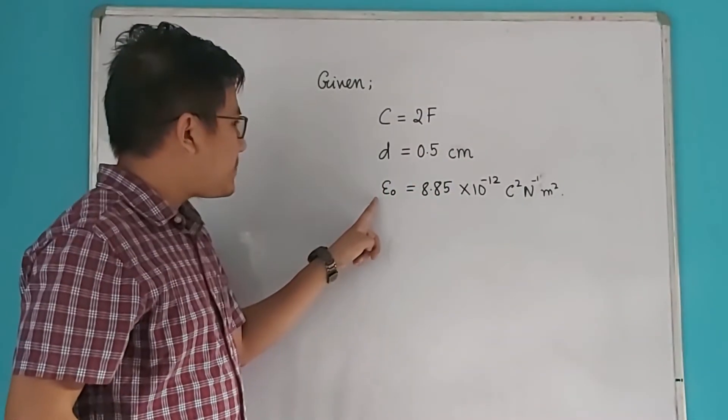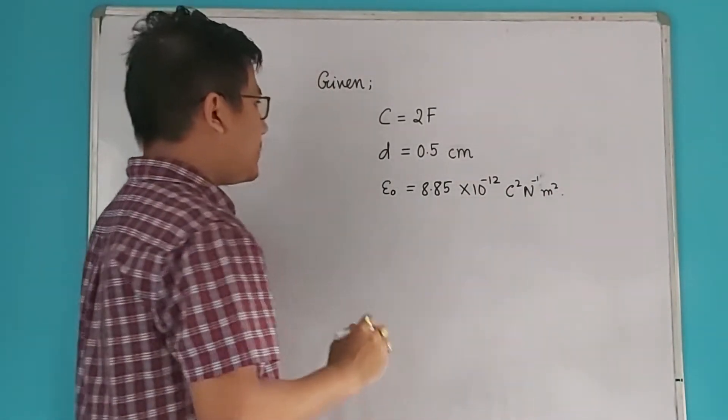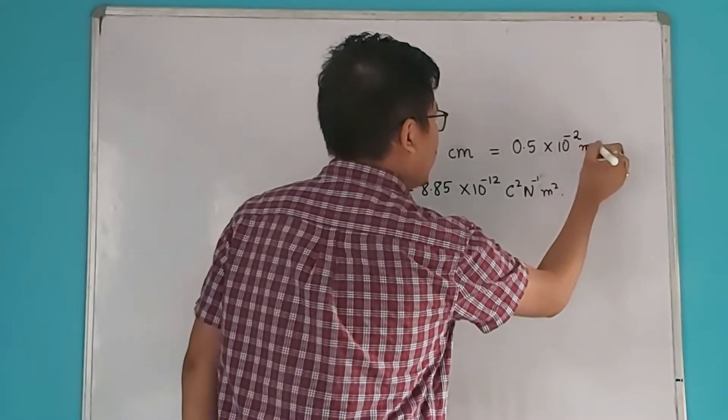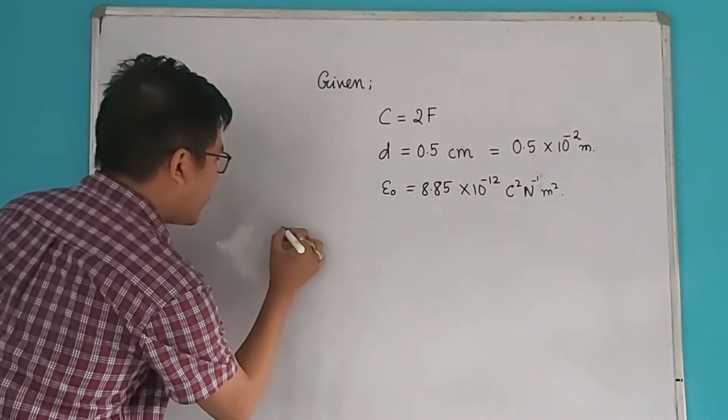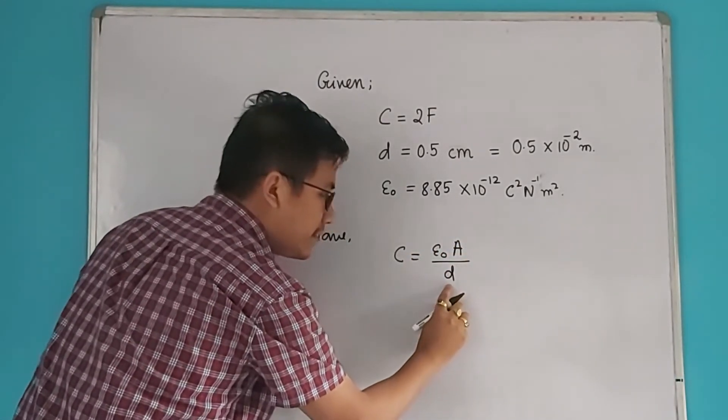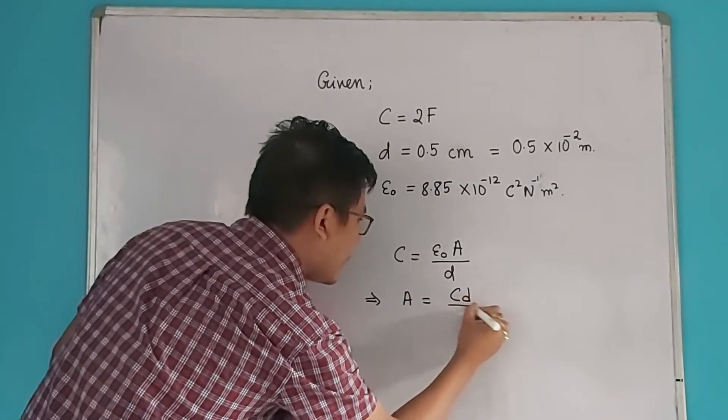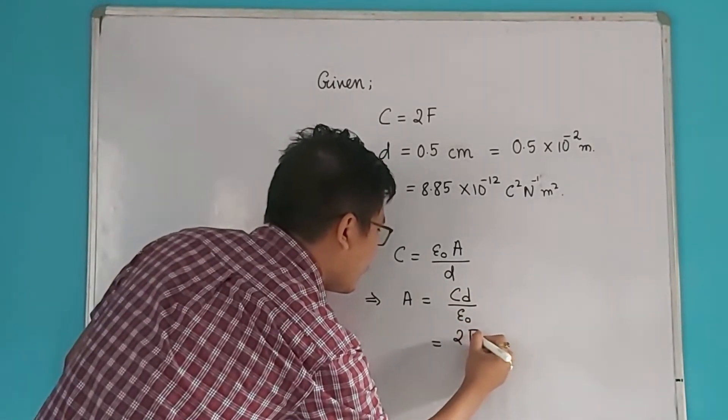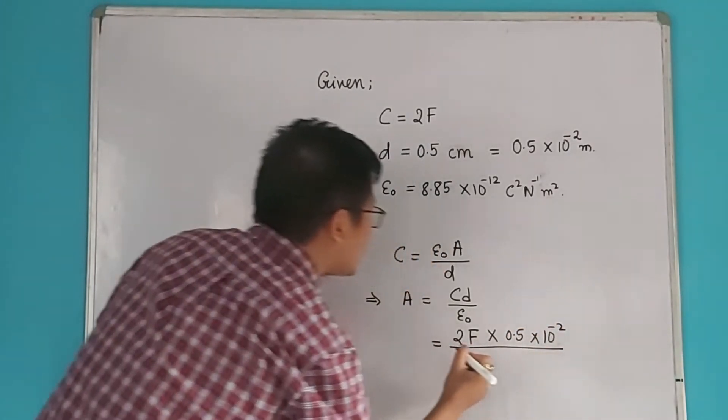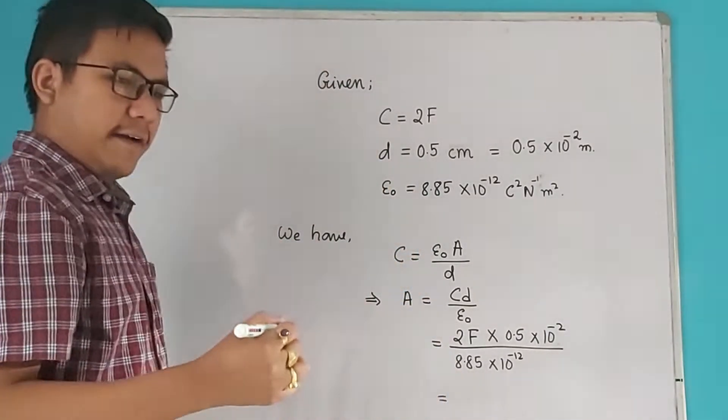The problem gives capacitance 2F and separation 0.5 cm. The electrical permittivity of vacuum is 8.85 into 10 to the power minus 12. Let's first convert this to SI: 0.5 into 10 to the power minus 2 meters. Using the formula, capacitance C equals epsilon_0 times A by d. So area A equals C times d by epsilon_0.